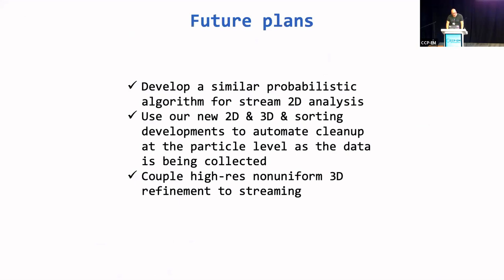The future plans are to develop similar probabilistic algorithms for stream 2D analysis, and then use our new 2D, 3D, and sorting developments to automate cleanup at the particle level as the data is being collected — so that you come home with a clean dataset. Then couple high-resolution non-uniform 3D refinement to the streaming and possibly use the priors that Charles just introduced, if we can find that little offline program to apply to the even-odd pairs in our iterations.